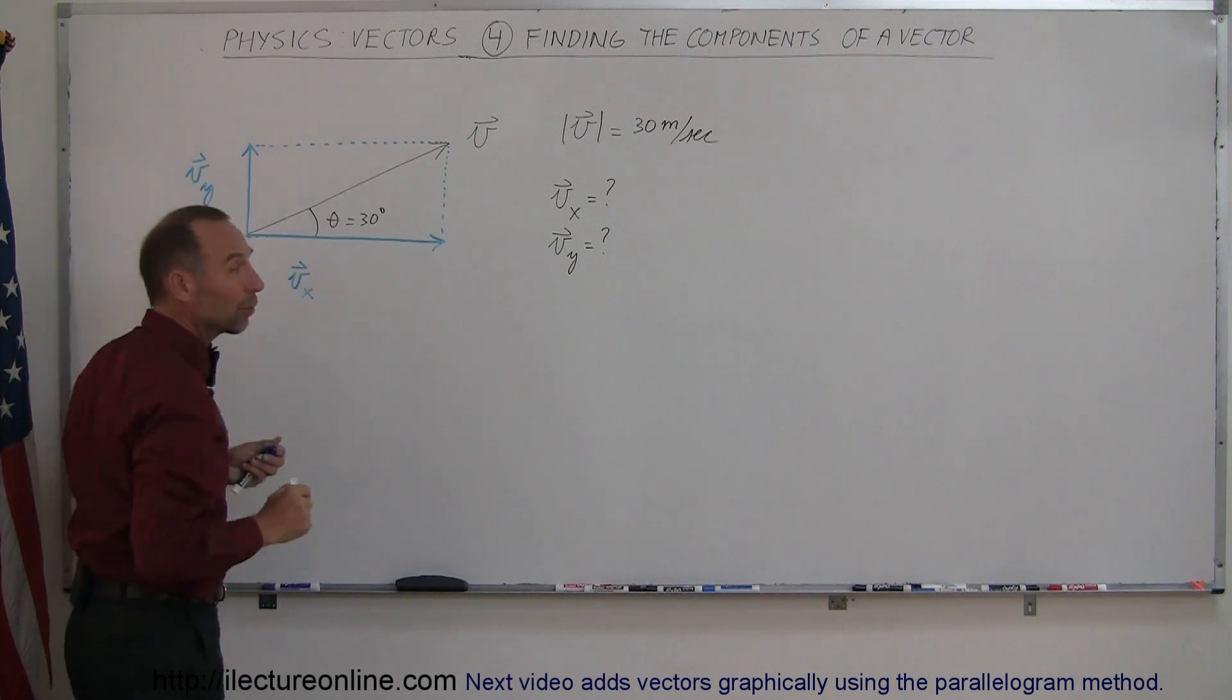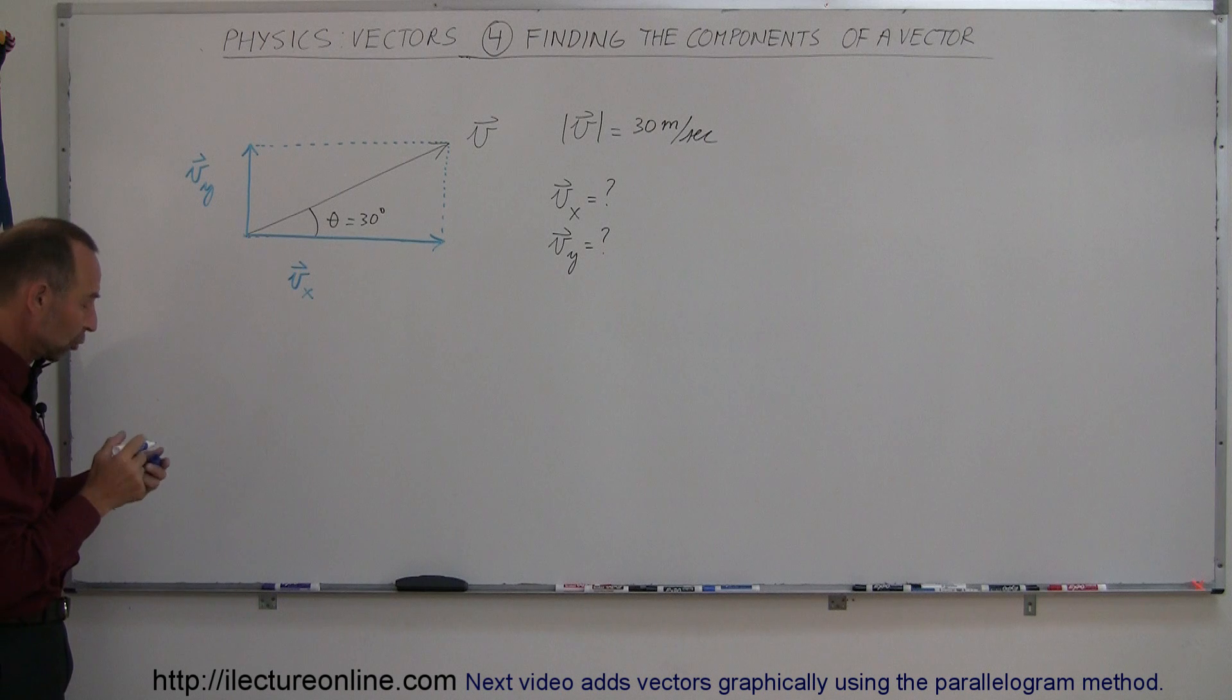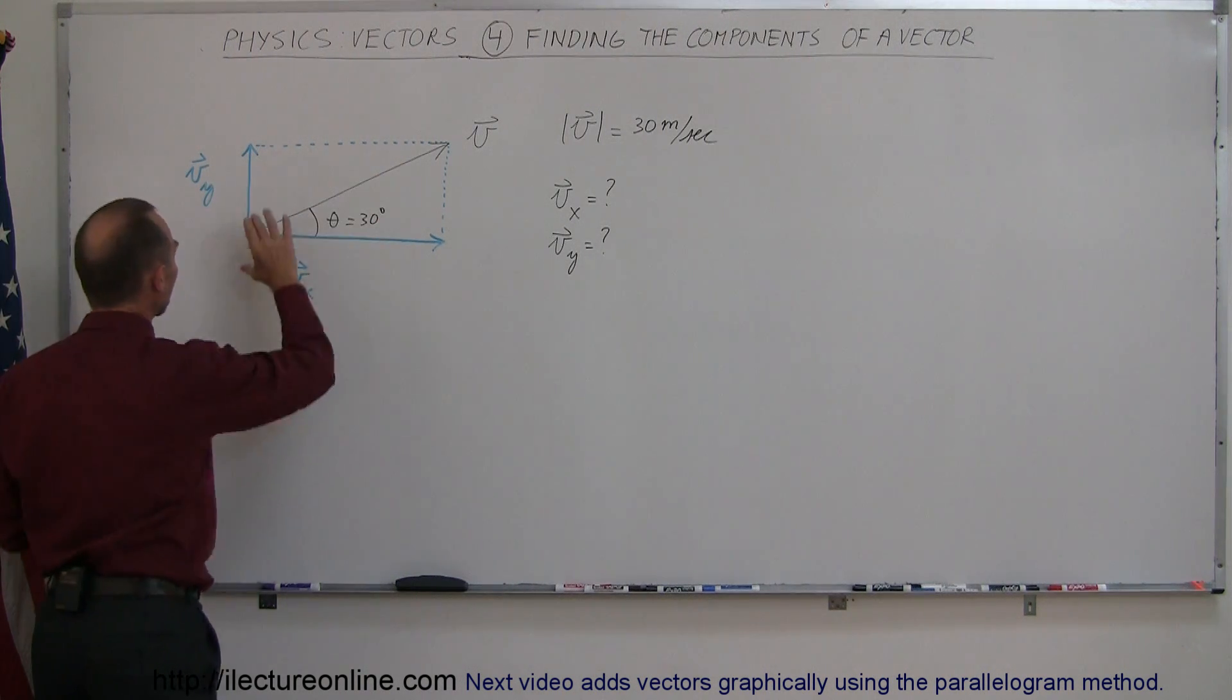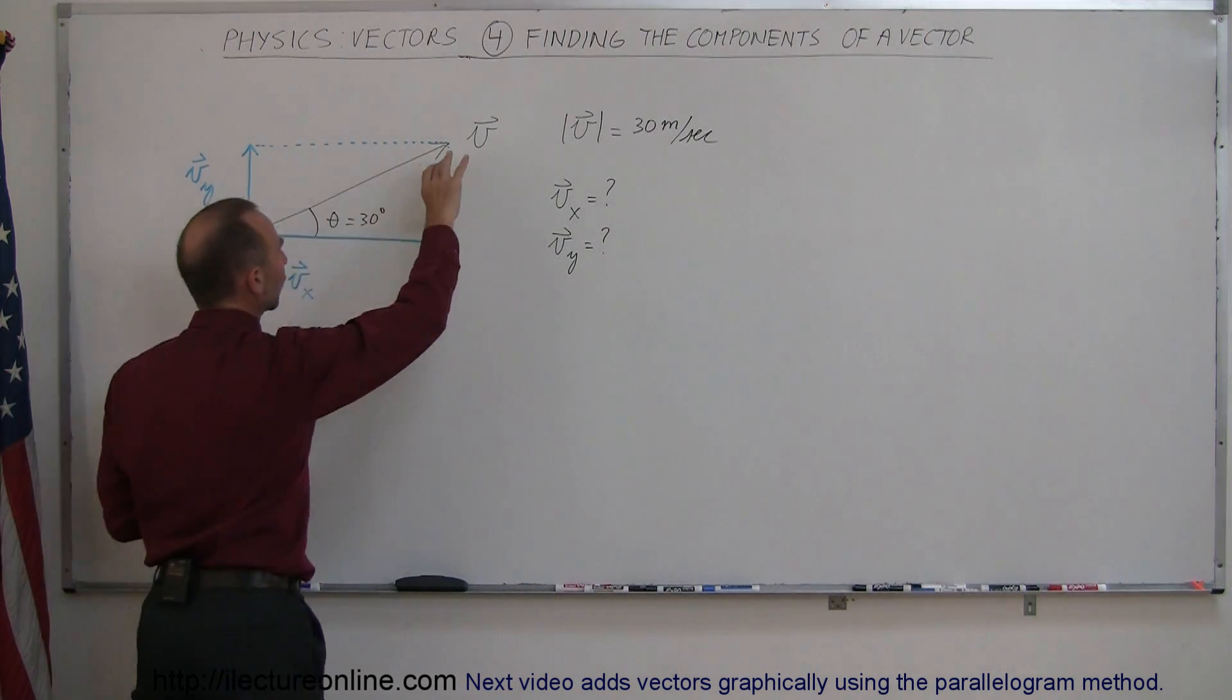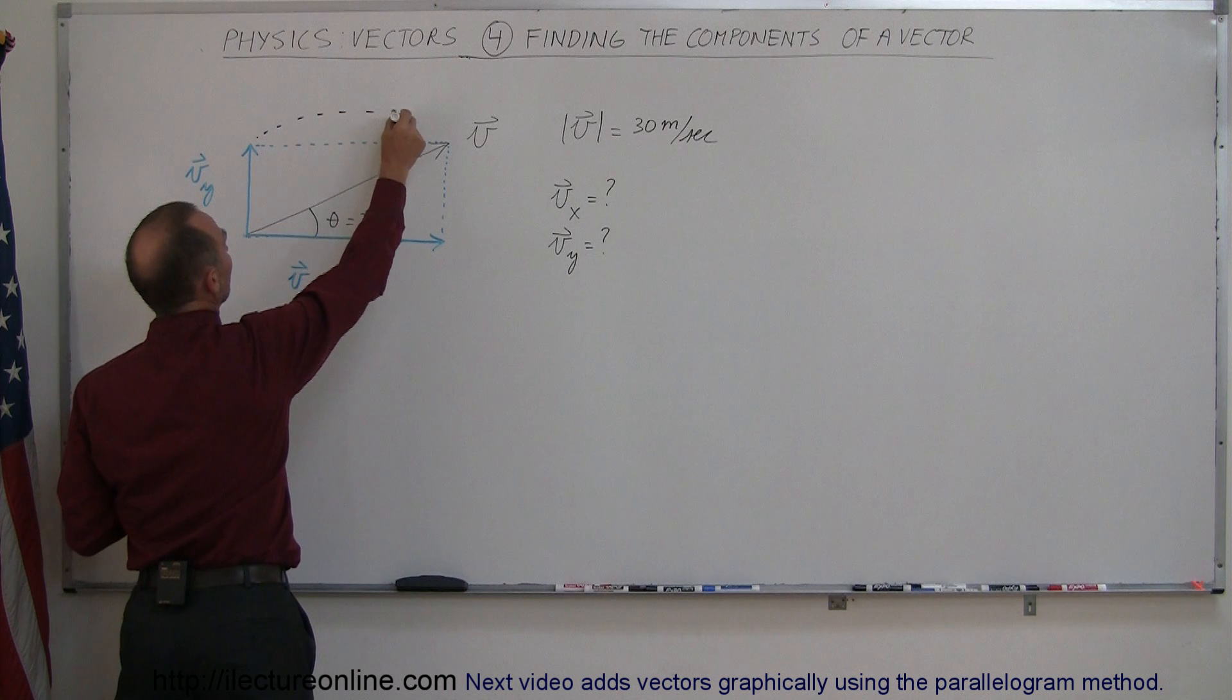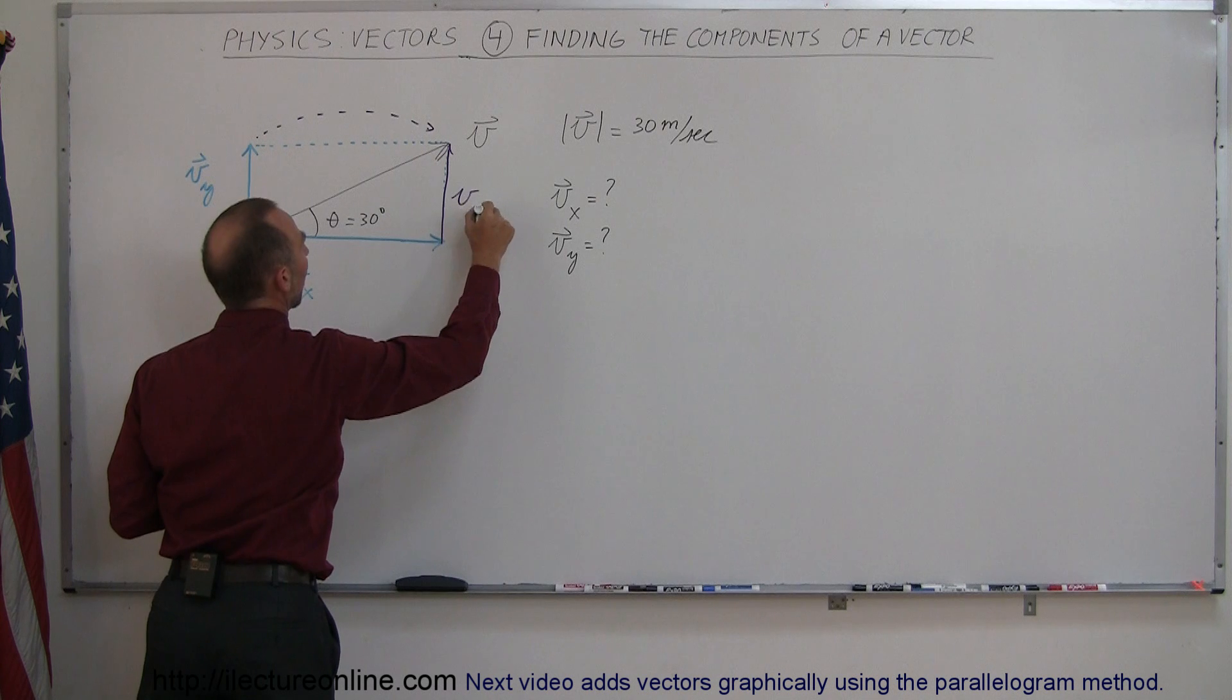Notice since they both have little arrows on top of the v's, that means that they're actually representative of vector quantities. And then of course again, I can move any vector around anywhere I like, so I'm going to move my y component of the vector over here, because that makes it easier to see. So I'm going to move that over here and call this my v sub y.